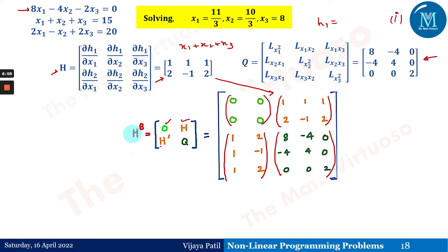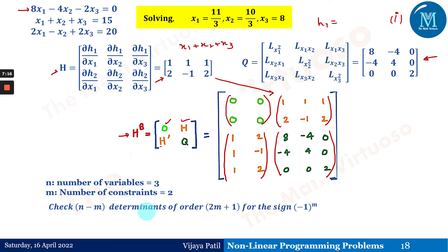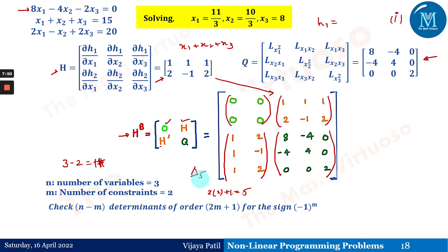The bordered Hessian is composed of four blocks: a zero matrix, the H matrix, the transpose of H, and the matrix Q (second-order partials of L). Here n is the number of variables (3) and m is the number of constraints (2), so we need to check n − m = 1 determinant. The required order is 2(m + 1) = 2(3) = 5, so we compute the determinant of δ5.